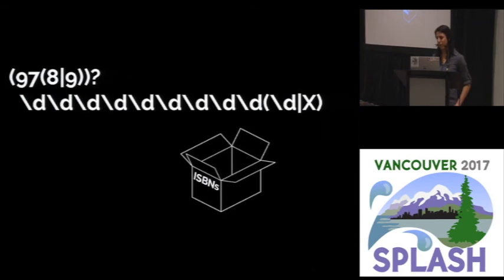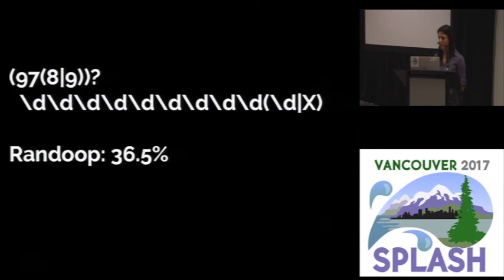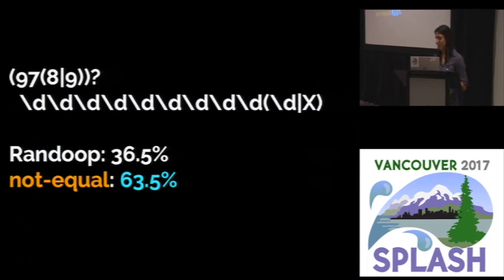So one example of this is that one benchmark took as input an international standard book number. So without looking at the code, we just went onto regexlib.com, and we found a regular expression for an international standard book number. And we then used this to generate inputs that we then passed into Randoop. So when we ran Randoop without any input guidance at all, it achieved 36.5% coverage. When we ran Yorick with the default constraint of not equal for a minute, it achieved 63.5% coverage.